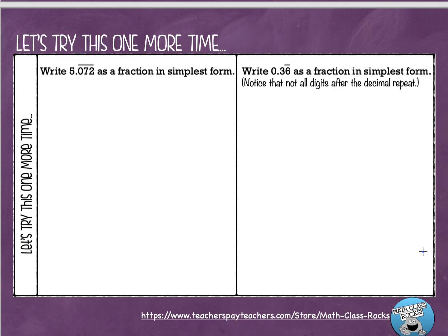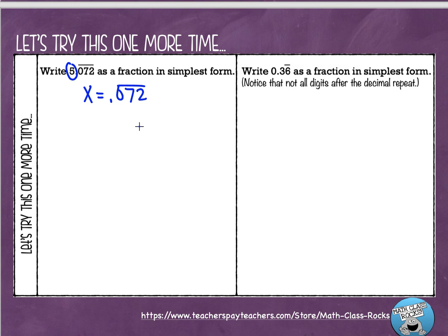Let's do another example. We're going to follow those same steps. The first thing I'm going to do is rewrite this repeating decimal as an equation, x equals the decimal. Now, this 5 right here, I'm going to save it until the end, because all that's going to do is give me bigger numbers to deal with. I'll circle it so we don't forget about it. I'm going to start out by writing just the decimal part: x equals 0.072 repeating.